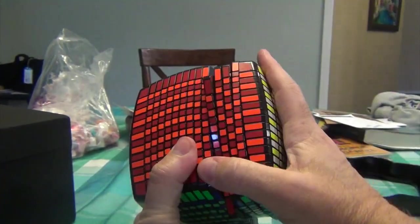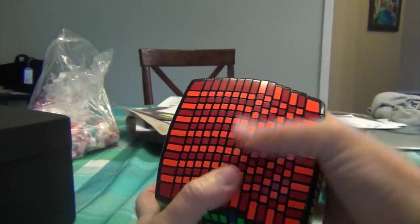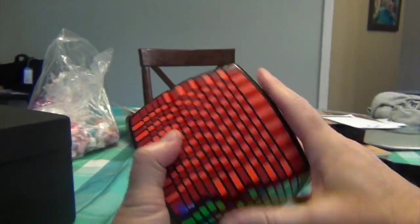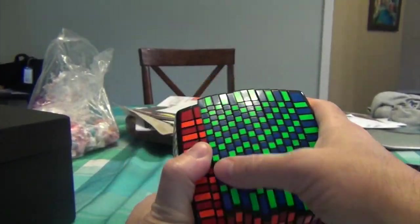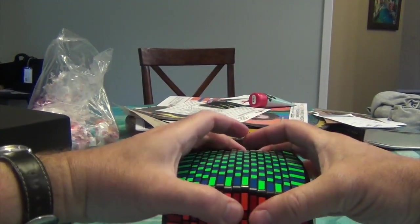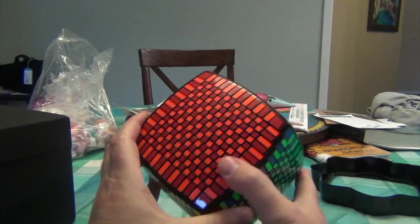This did come a lot faster than I thought it would. It was in the pre-order stage and my suggestion is to get this puzzle. I know the 17 by 17 is mass produced but that's a beast. This in terms of size reminds me of the 7 by 7. Here it is in the checkerboard pattern in all its glory.